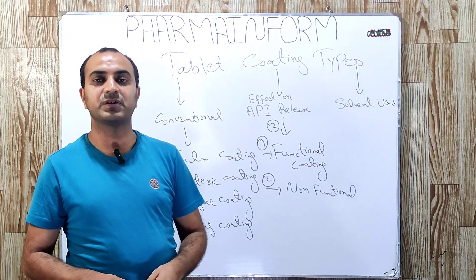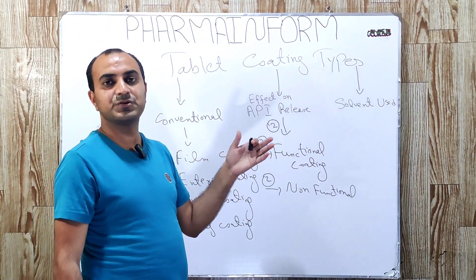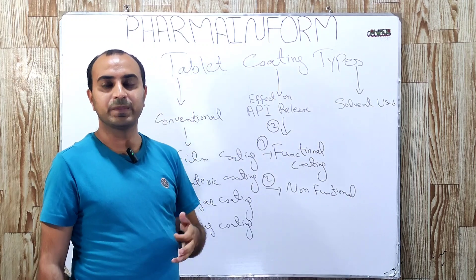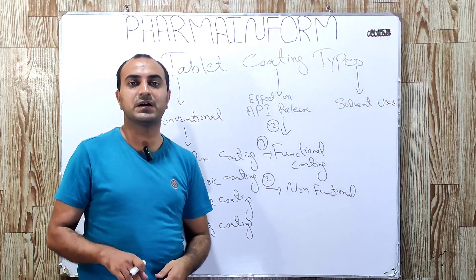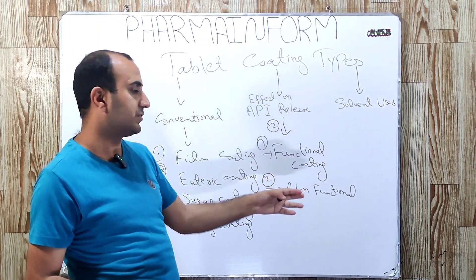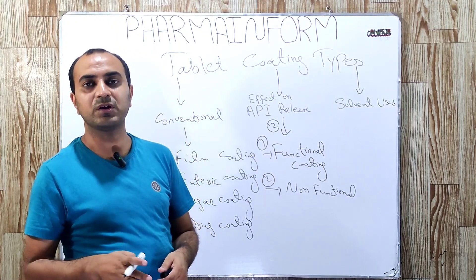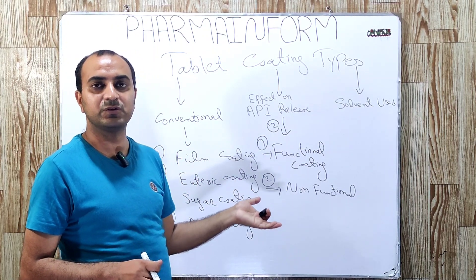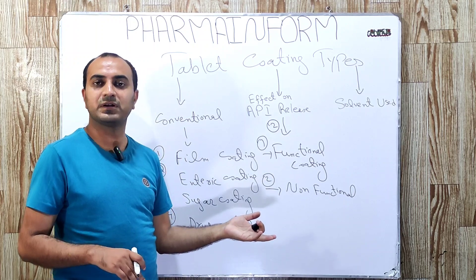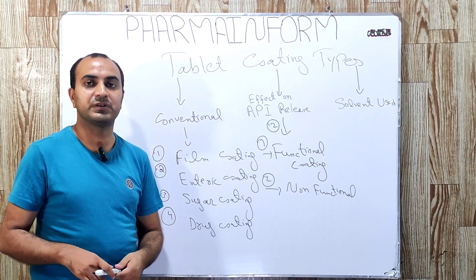The most common and important example of functional coating is the enteric coating polymer, which prevents the release of the API in the stomach and releases the drug in the small intestine. Other examples include extended release, sustained release, or delayed release polymers. The main example of non-functional coating is simple film coating, where the polymer is only used to mask taste, protect from the environment, or prevent mix-up, but has no effect on the release pattern.